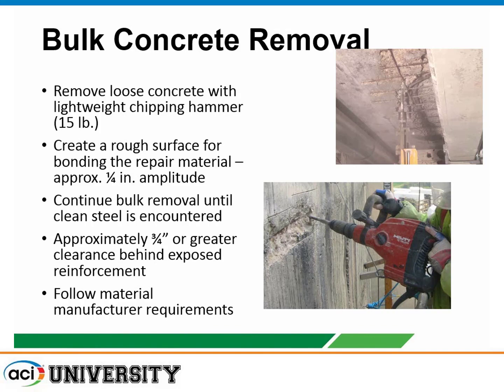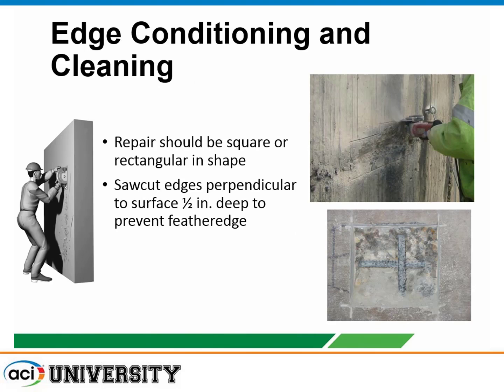Always follow the manufacturer's instructions — these are general guidelines. Proper concrete repair preparation is not only bulk removal; we also want to create sound saw-cut edges so the material has good performance. Patch shapes should be square or rectangular, since irregular shapes create more bonding areas and can induce stress in the repair material, causing isolated cracking. Saw cutting along the edges eliminates feather edges — thin sections that can have higher shrinkage and cause bonding durability issues — significantly improving the durability and longevity of repairs.